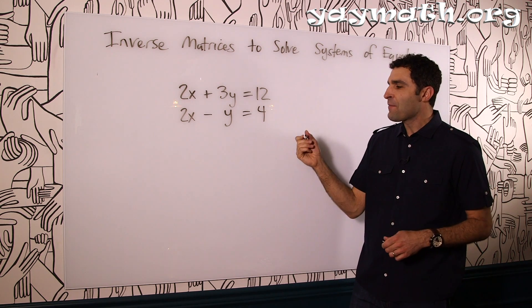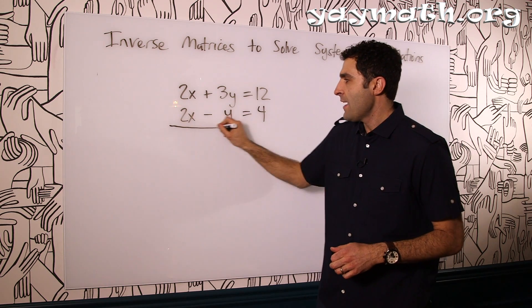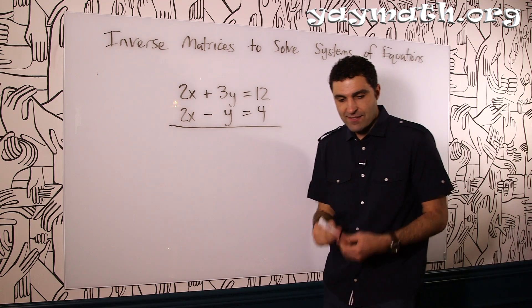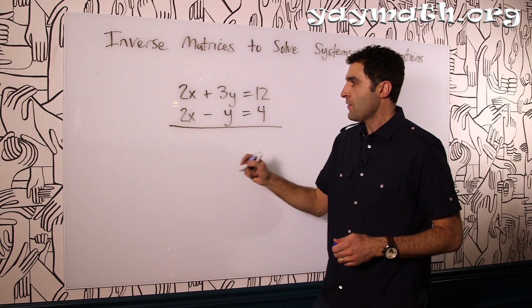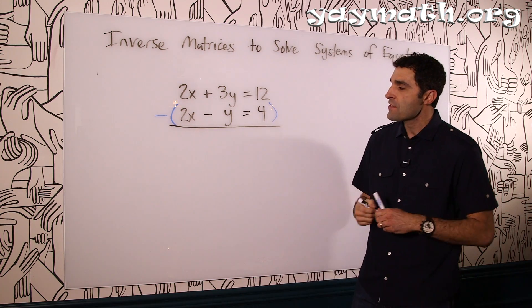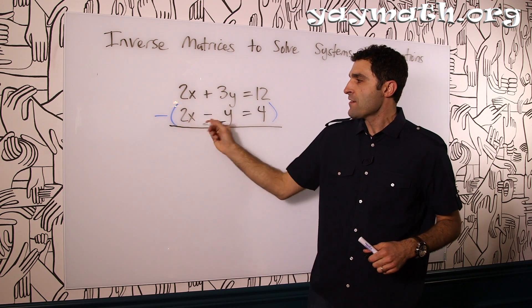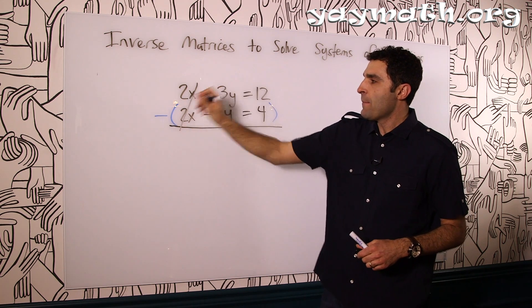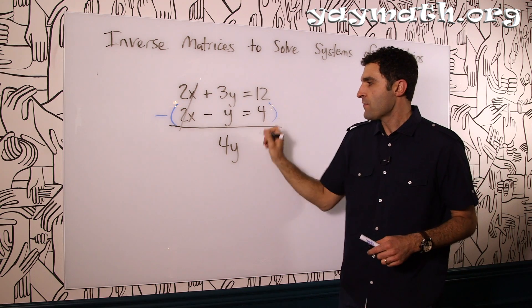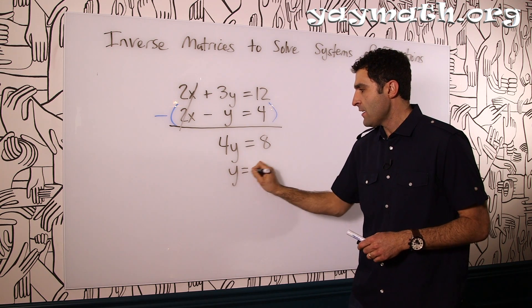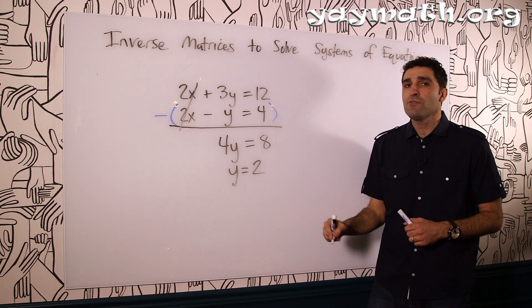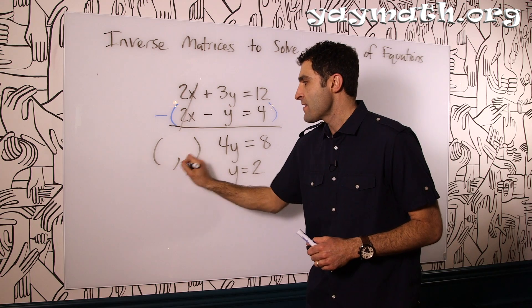All right, let's do this, Yay Math! So what I'm going to do between these two is, in order to eliminate one variable, I'm going to go ahead and subtract this entire equation, the second one. So here we go, we subtract the second equation from the first. 2x minus 2x go, 3y minus negative y becomes 4y, and 12 minus 4 is 8. Divided by 4, and y equals 2.